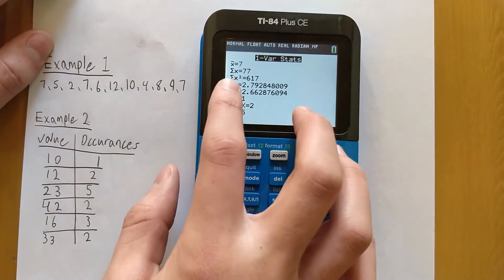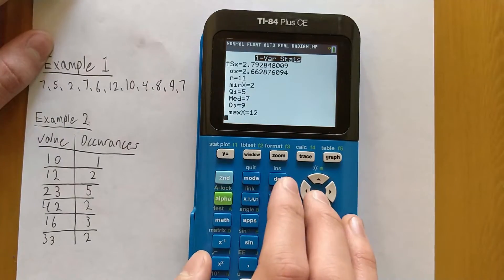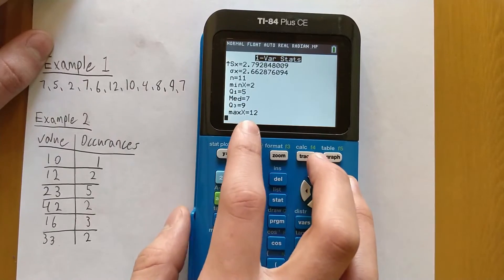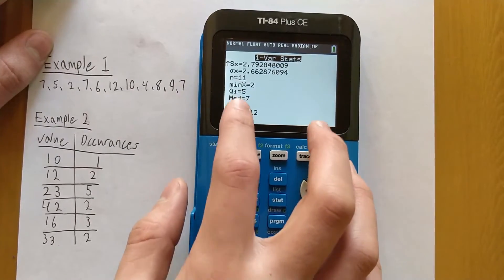So x̄ is equal to the mean, we have our sum, our variances, we have the number of values in the data set is n, we have the minimum, the maximum, the median here, and our quartiles.